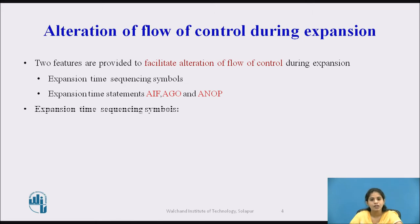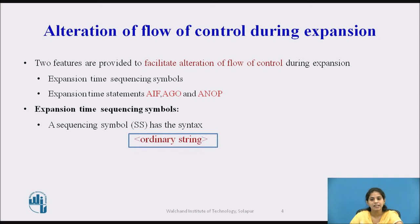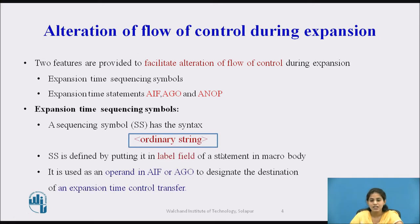First we see the expansion time sequencing symbol. A sequencing symbol has a syntax — it is written as an ordinary string. A sequencing symbol is defined by putting it in the label field of the statement in the macro body. Basically, the sequencing symbol is used as an operand in the AIF or the AGO to designate the destination of an expansion time control transfer.